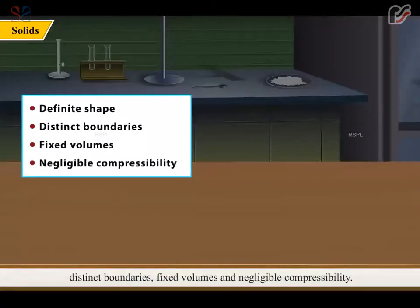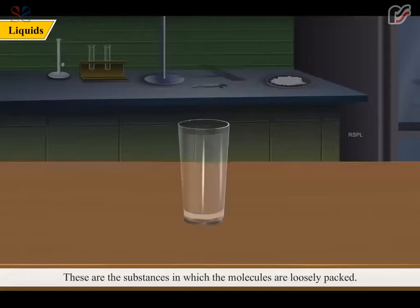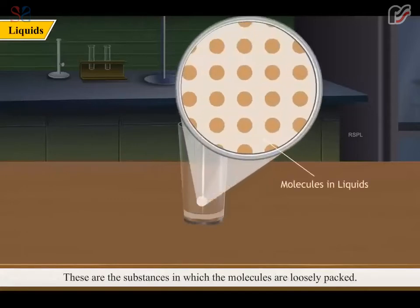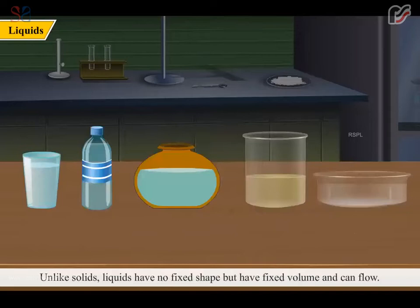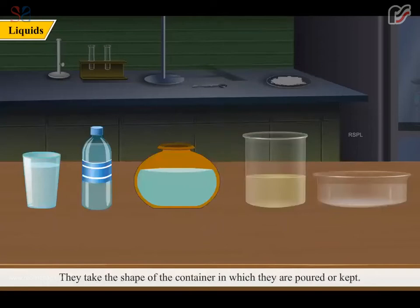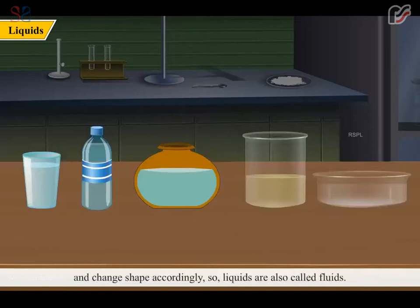These are the substances in which molecules are loosely packed. Water, cooking oil, milk, juice and cold drink are some examples of liquid. Unlike solids, liquids have no fixed shape but have fixed volume and can flow. They take the shape of the container in which they are poured or kept. They can flow from one place to another and change shape accordingly.